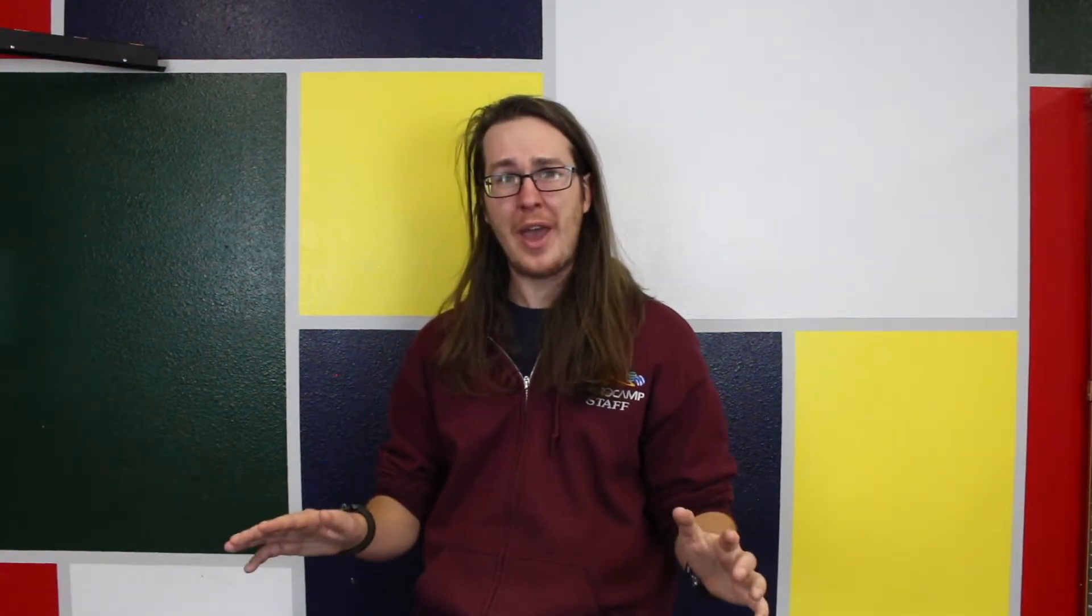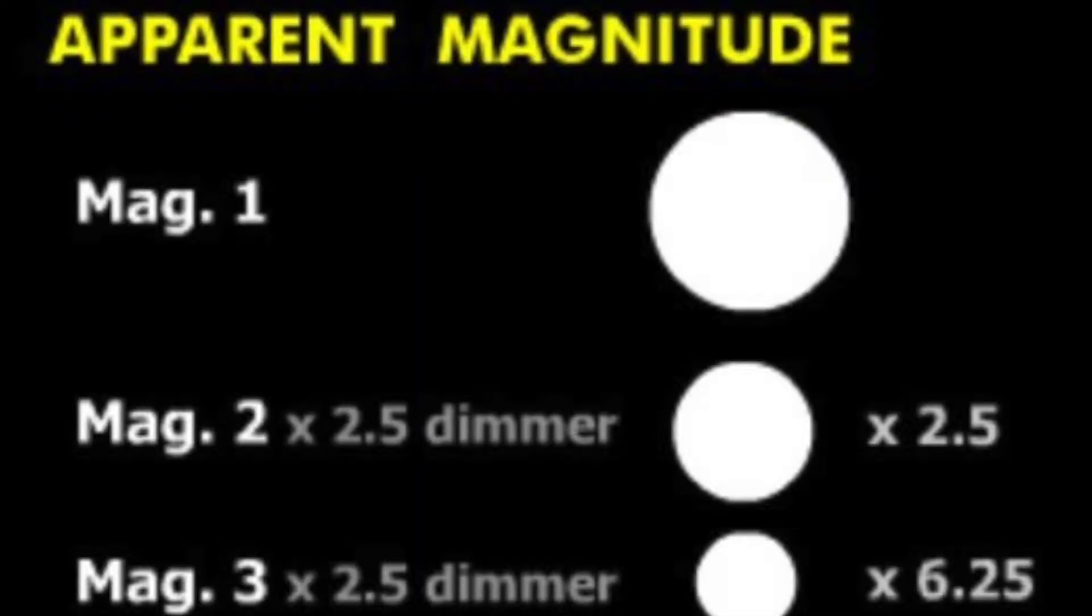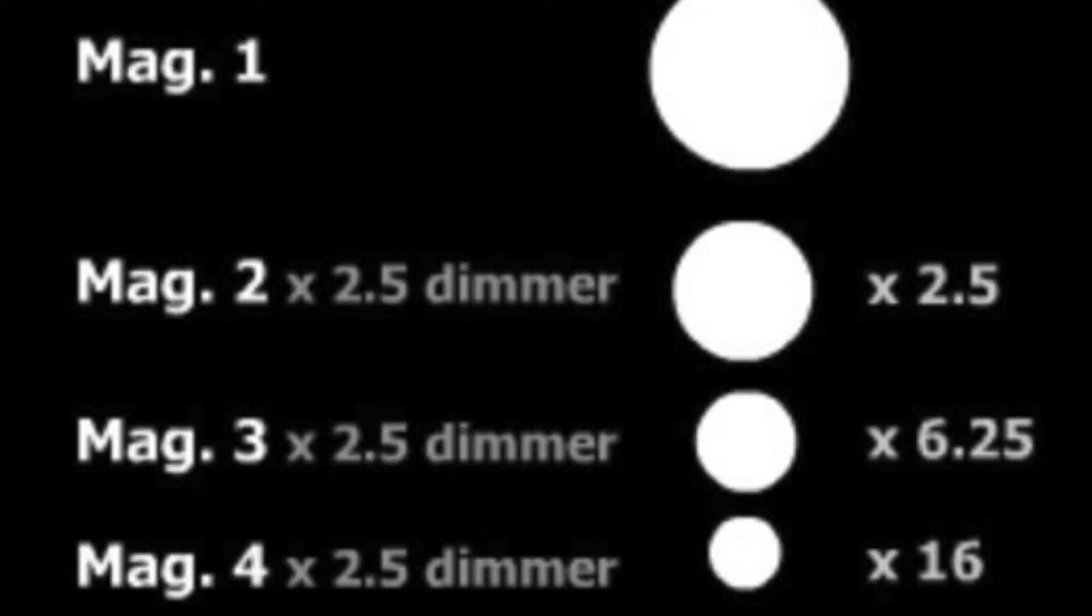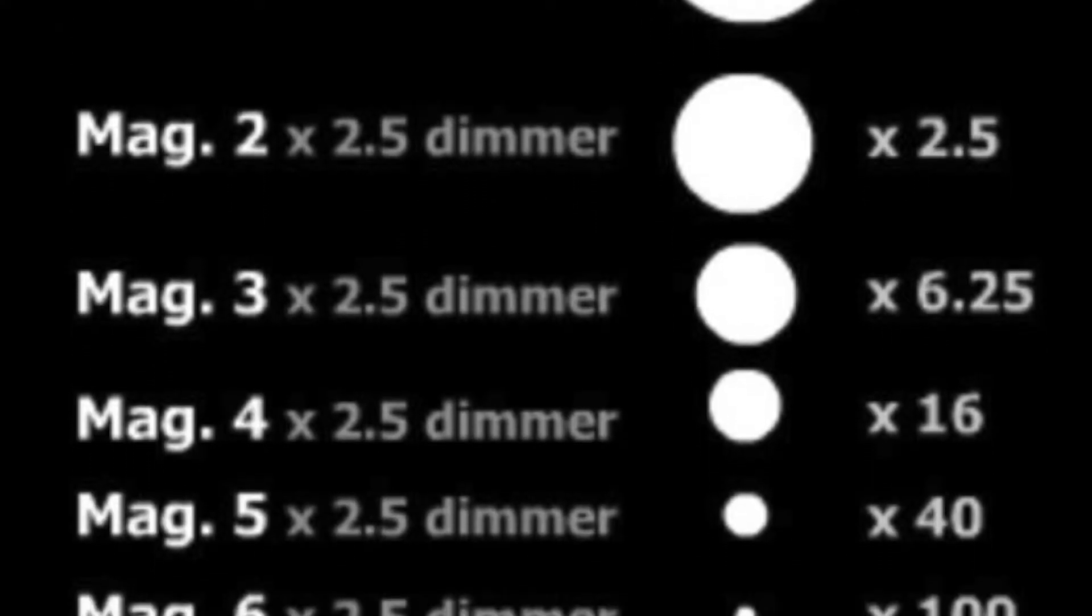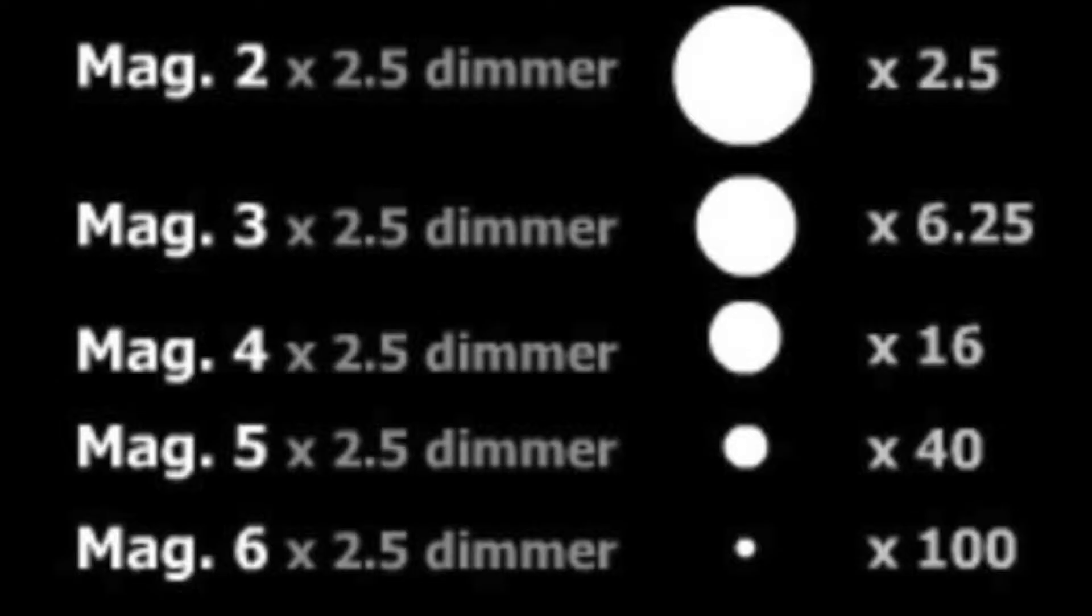Now this was not a particularly accurate way of measuring brightness, but later astronomers took the system and improved upon it. They created a logarithmic scale so that every increase of 1 in the magnitude scale equated to about 2.5 times decrease in brightness. So something that's magnitude 5 would be 100 times dimmer than something that's magnitude 0.